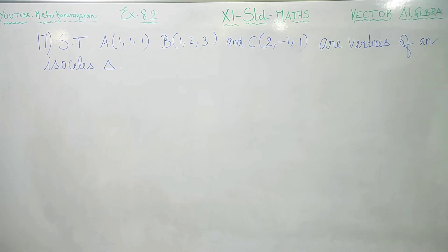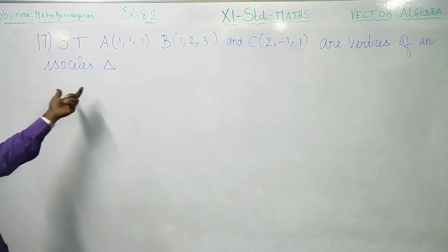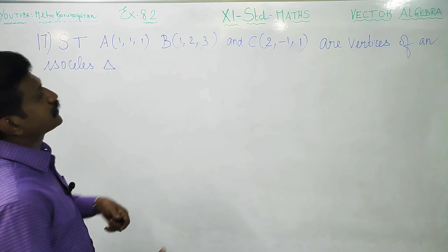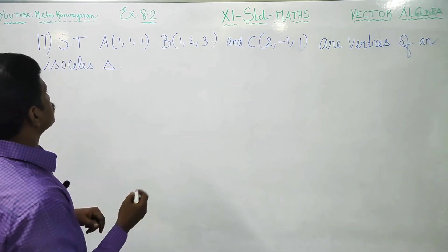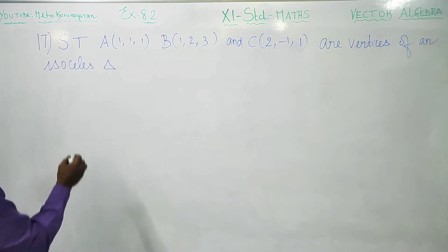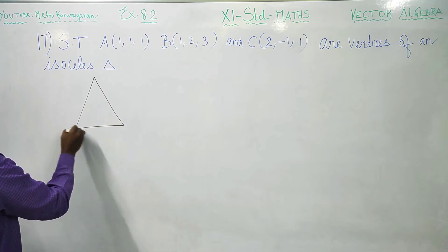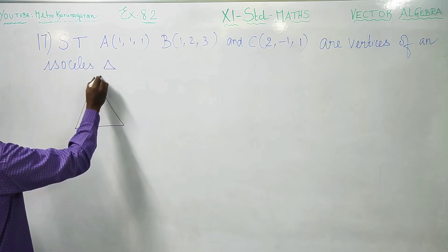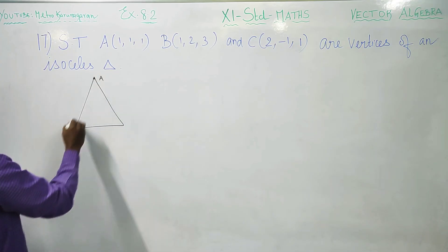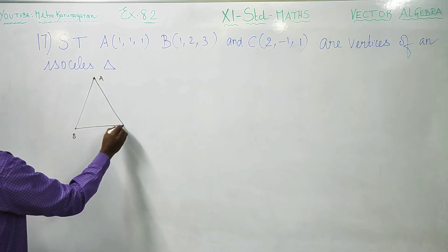Dear 11th standard students, in exercise 8.2, sum number 17, we need to show that the given points are the vertices of an isosceles triangle. We are given some points — let them be point A, point B, and point C.